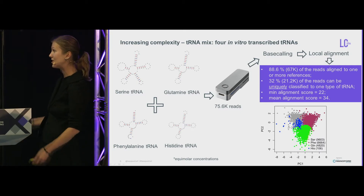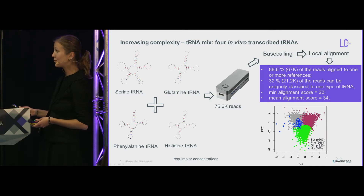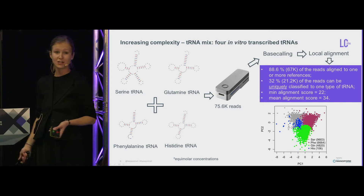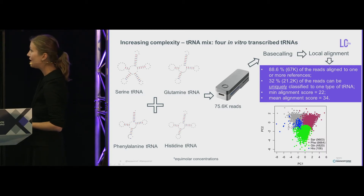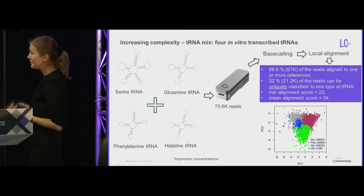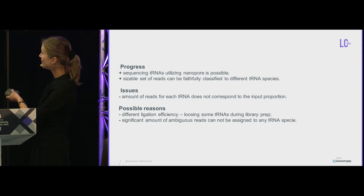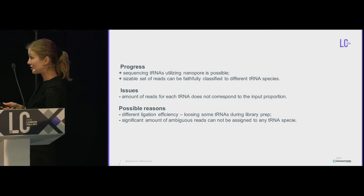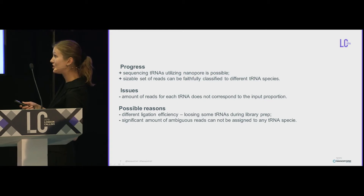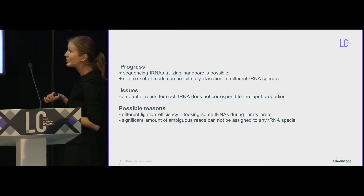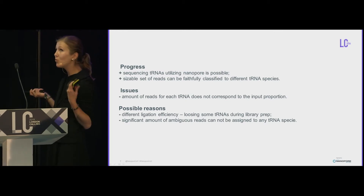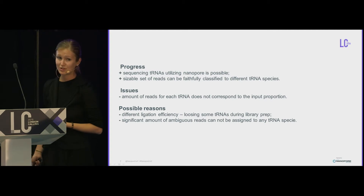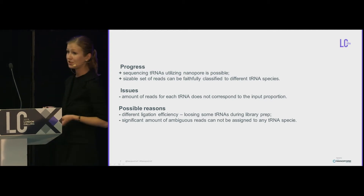Another issue: not all tRNAs were detected equally even though we mixed four in equal concentrations and ligated them similarly. For example, histidine was almost not detected — we didn't get any alignments. We got a mean alignment score of 34, which with a range of 75-nucleotide tRNAs is still quite low. We can use nanopore to sequence tRNAs and some can be distinguished, but the amounts recovered don't correspond to the input proportions. We think this is due to different ligation efficiencies for particular tRNA species.